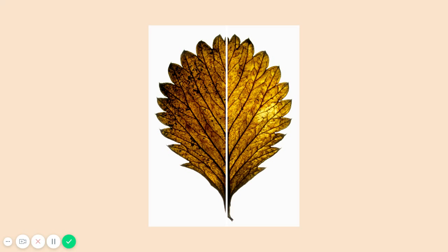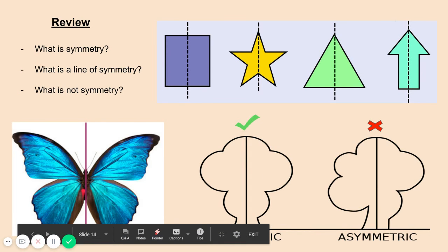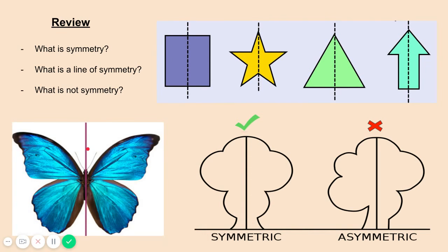Now that you've learned about symmetry, you can start looking for it in your everyday life. Before we conclude this video, let's do a little bit of review. What is symmetry? Symmetry, to keep it simple, is when something is the same on both sides — it equally matches up. What is a line of symmetry? A line of symmetry is an imaginary line that we draw right in the middle of an object or an image to help us determine if something is symmetrical. So if I were to fold this butterfly in half right on the line of symmetry and they match up equally, we know that it's symmetrical.